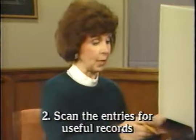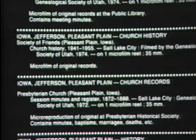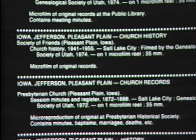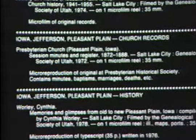Now let's scan through the headings to find Pleasant Plain. Here's Franklin County, Hamilton County, and Jefferson County. I'll go to the end of the Jefferson County records where the cities are listed. Here's Abingdon, Fairfield, and Pleasant Plain. You'll notice that headings in the locality section have two parts: the name of the place and the type of record. There are three records listed here for Pleasant Plain: a church history, church records, and a history.